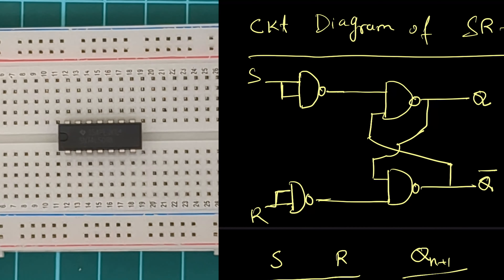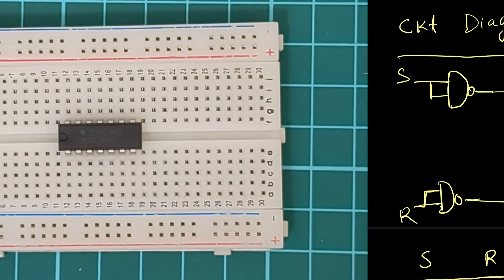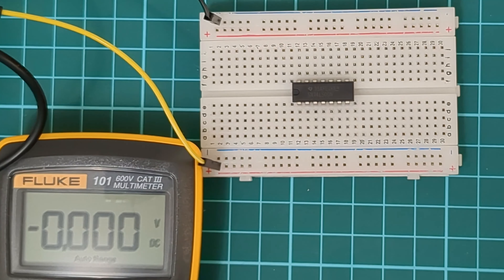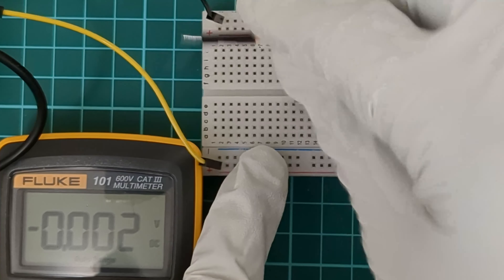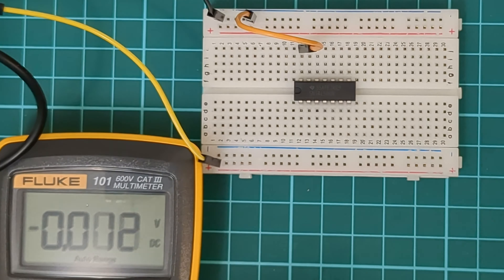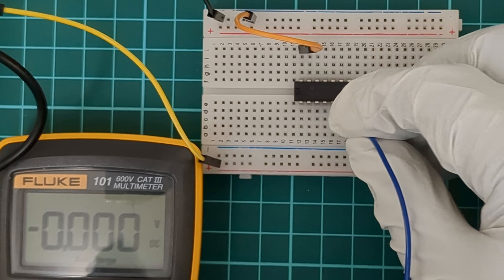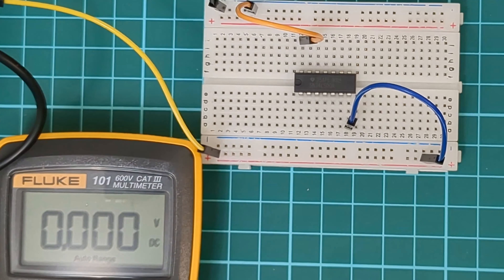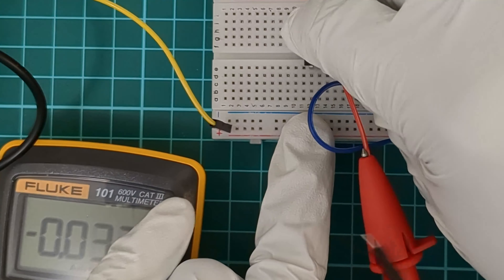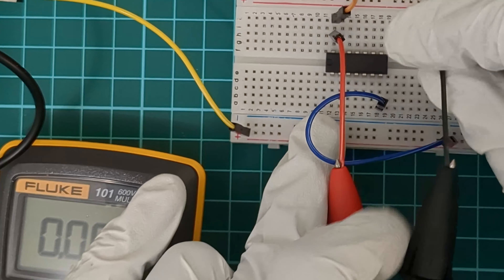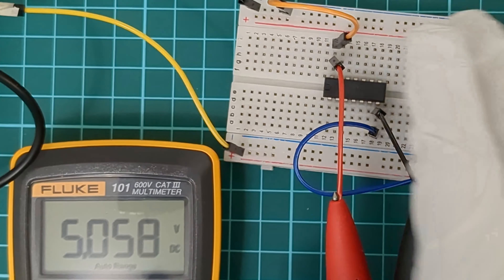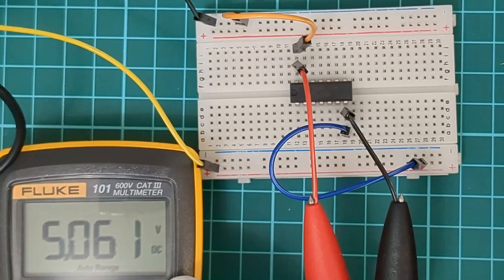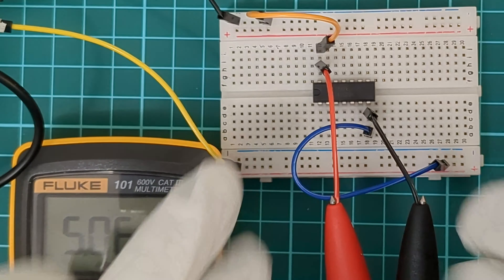First we need to give the power supply to this IC. We all know that pin 14 will be VCC and pin 7 will be ground. We will use our multimeter on pin 14 and pin 7 — and we got 5.03 volts, which means this is completely fine.